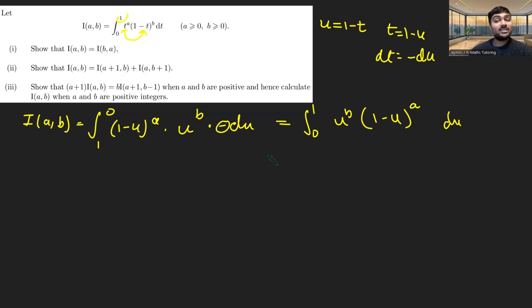And now the crucial fact here is u, because this is a definite integral, u is simply a dummy variable. So I could just as well replace u with any other letter here, x, y, z. But in particular, I could also replace it with t. And if I do that, I get the integral from 0 to 1 of t to the b times 1 minus t to the a dt.